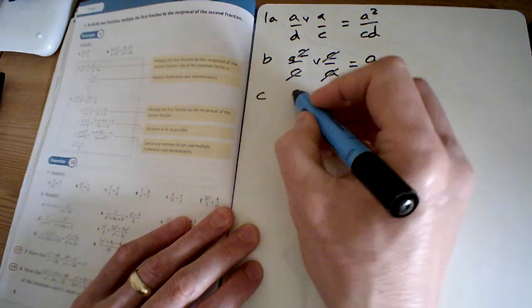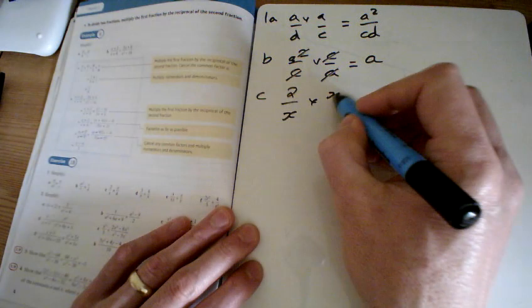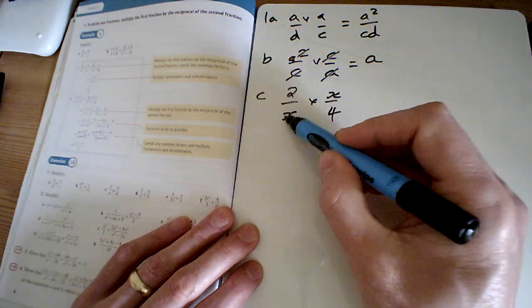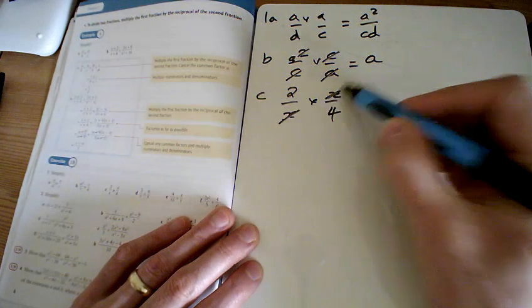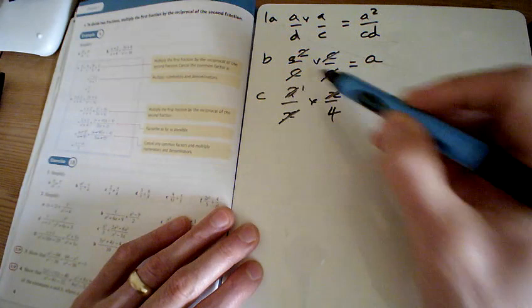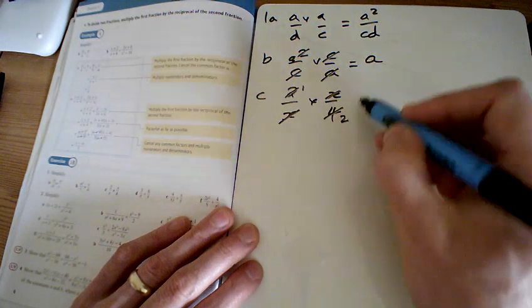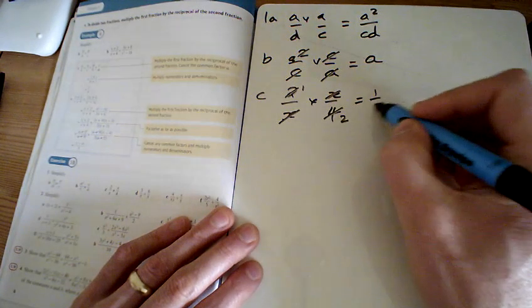For c, we've got 2 over x times by x over 4, cancelling the x on the bottom and the x on the top. 2s into 2 go 1, 2s into 4 go 2, giving us a total of a half.